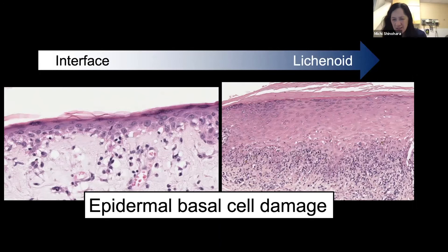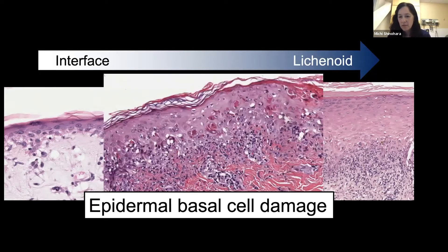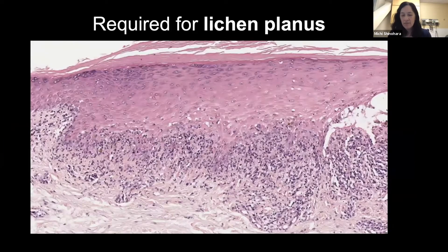These necrotic-appearing cells aren't true necrosis. Different terms — Civatte bodies, colloid bodies, dyskeratotic keratinocytes — all refer to the same process and would be used when thinking about interface lichenoid dermatitis. Sometimes there's something in the middle, with many dyskeratotic keratinocytes but a more sparse inflammatory infiltrate. Similar to psoriasis, where our task is to prove it's not psoriasis, when you see lichenoid or interface dermatitis, our task is to prove why it's not lichen planus.